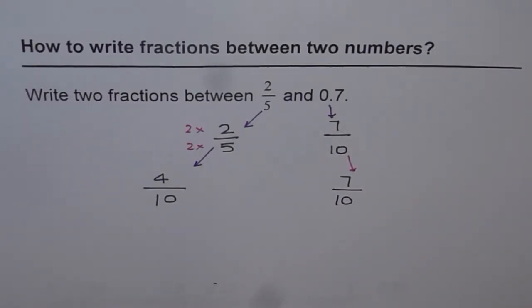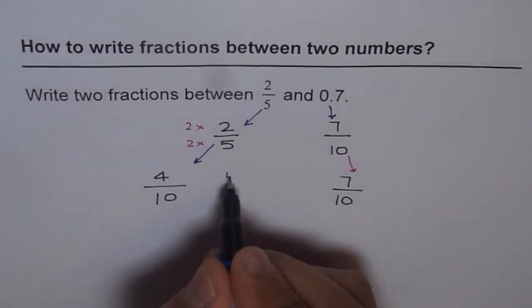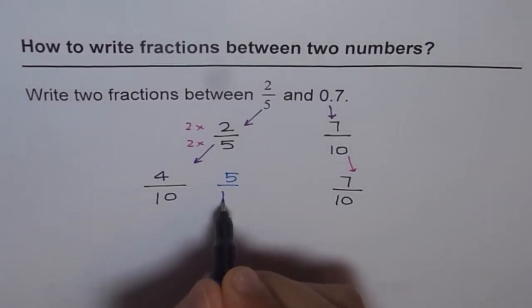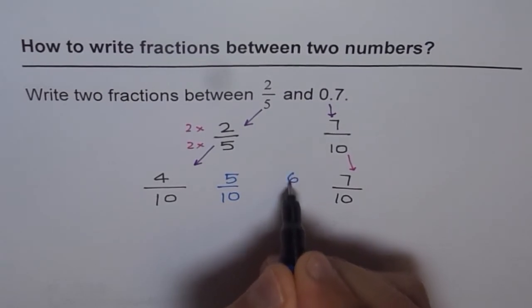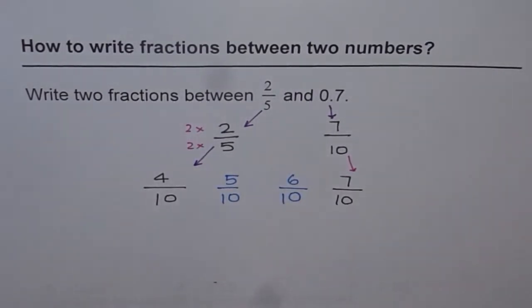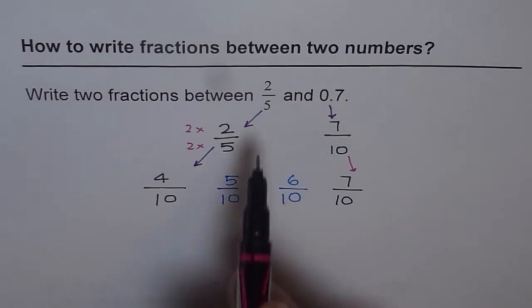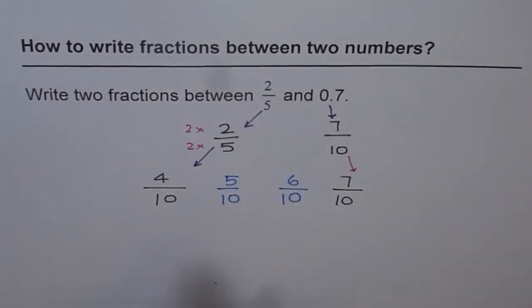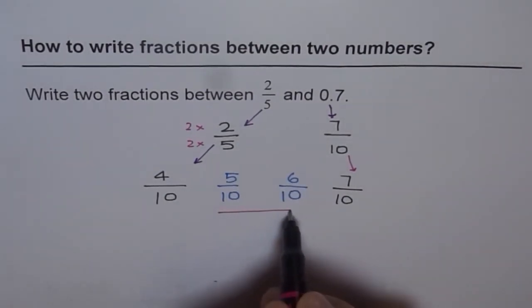Oh yeah, now it is simple. The numbers 5 and 6 are between 4 and 7. So we can write 5 over 10 and 6 over 10. These are the two numbers which could be written between 2 over 5 and 0.7. That is our answer.